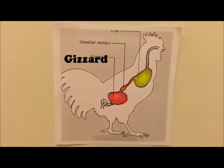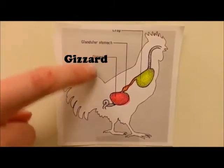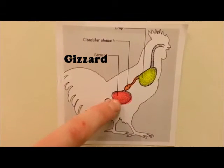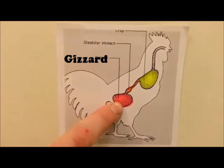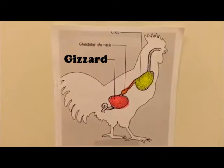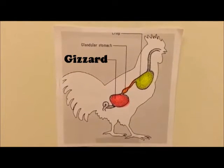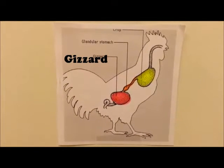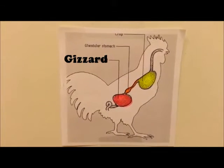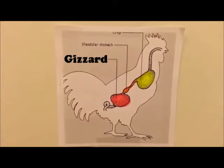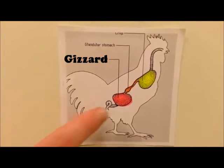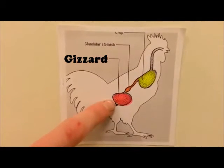Another term that we use is something called the gizzard. The gizzard is this structure right here — basically it's a specialized stomach with thick muscular walls that grind the food. It basically acts as our teeth do to break down food and aids in digestion.